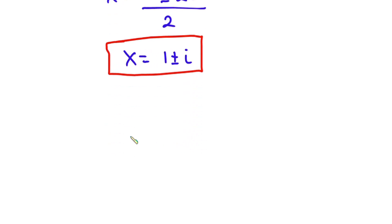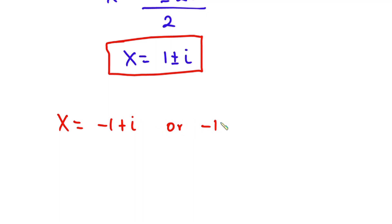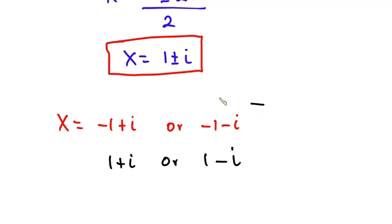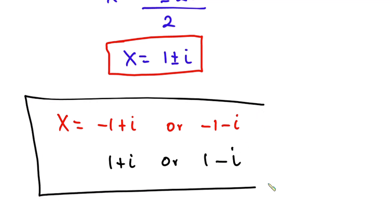In all, we have four answers for x: x equals negative 1 plus i, or negative 1 minus i, and also 1 plus i, or 1 minus i. These are the four complex solutions for the equation.